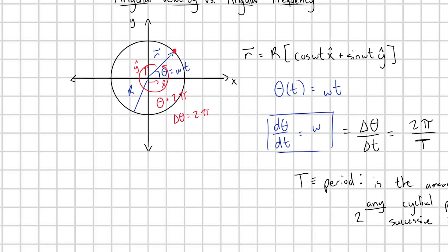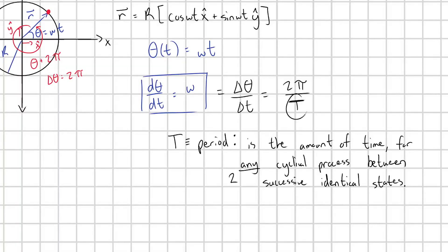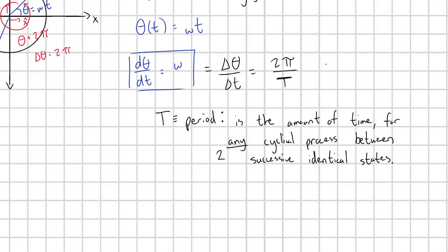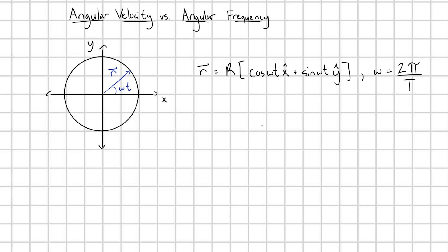And so this period is the amount of time for any cyclical process between two successive identical states. So in this circle, I'm returning to the exact same point in some time, capital T, my period. But I want to be clear that we can define this period for any cyclical process, not just circular motion.